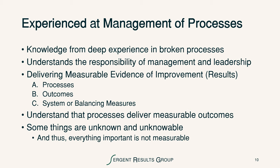It's important that members of the guiding council deliver measurable evidence of improvement. They need to be focused on results of processes or outcomes from processes. They also need to think about the systemic or balancing measures that ensure we're not sub-optimizing the whole system by optimizing just a part. Council members need to understand that processes deliver measurable outcomes, although some things are unknown and unknowable — thus, everything important is not necessarily measurable.